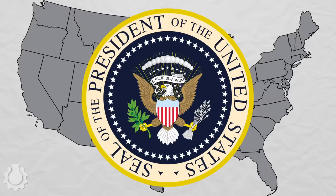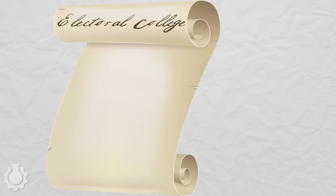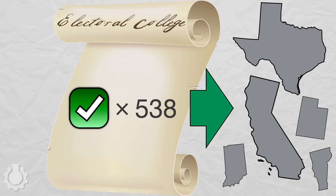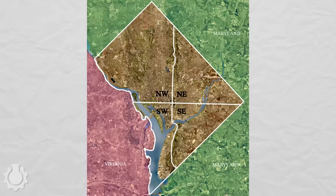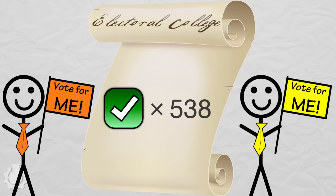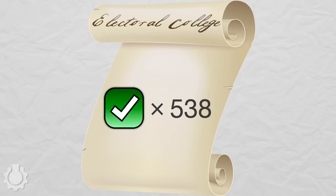The United States picks its president with the Electoral College — 538 votes distributed by population, mostly, to the 50 states and D.C. To become president, you need to win a majority of those votes. But 538 is an even number, so what happens when the race for president is tied?